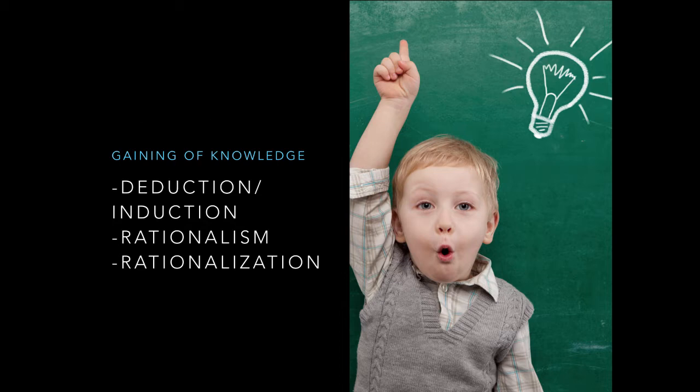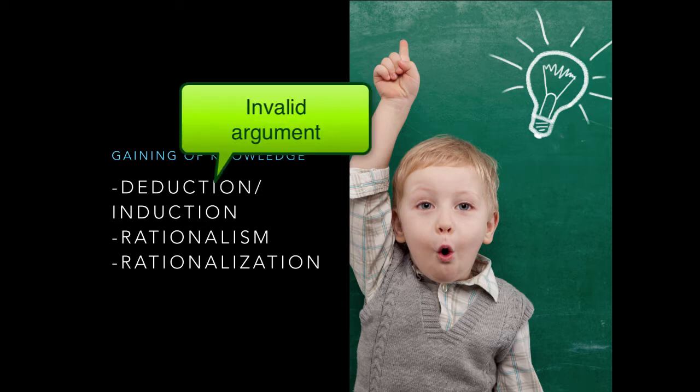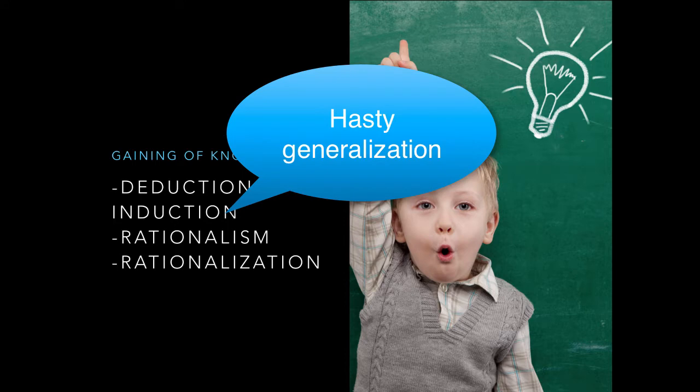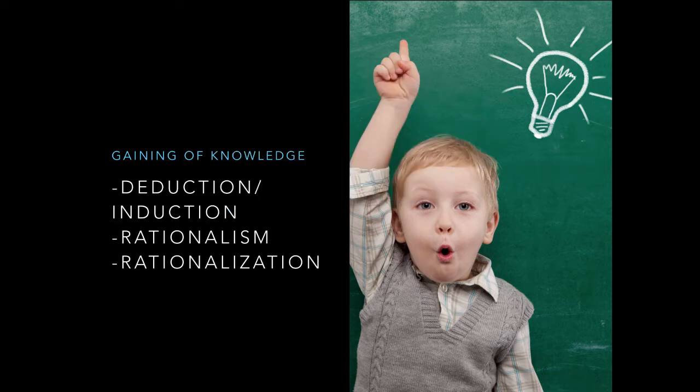Although these provide us two very good methods of gaining information, there are some fallacies or problems we need to be aware of. For example, in deduction, when we go from the general to the specific, we can have an invalid argument, or what we call a syllogism. And in the inductive method, we can make hasty generalizations. So we need to be aware not to jump to too many conclusions and not to have invalid arguments. Those are the two fallacies we need to be aware of when dealing with deduction and induction.